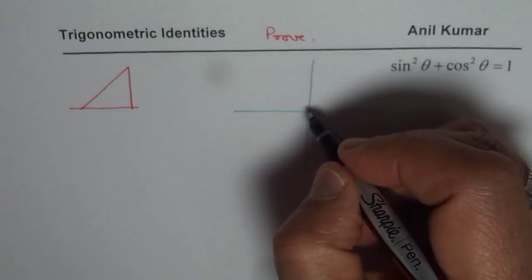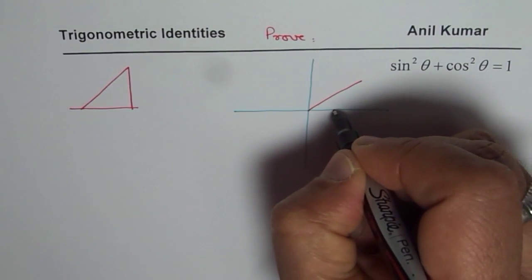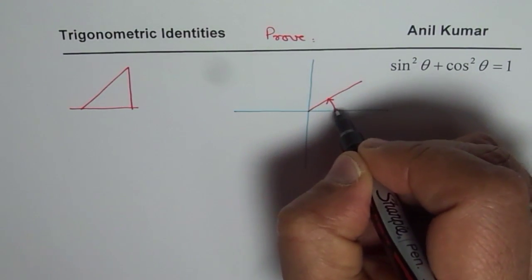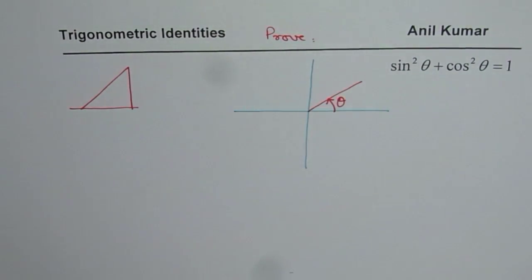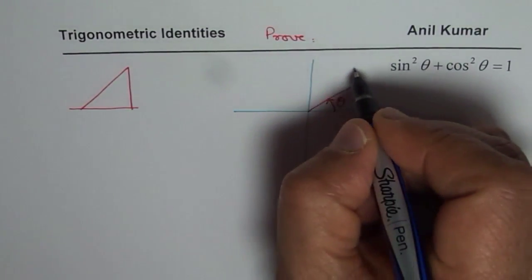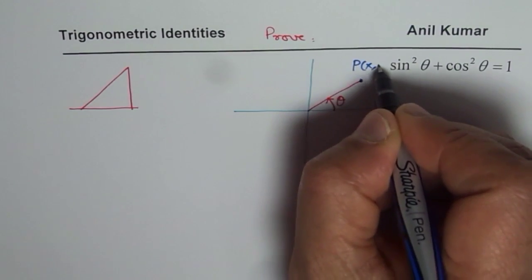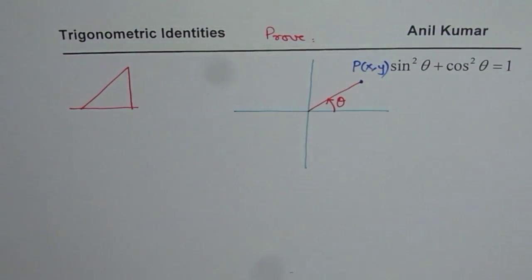we are always referring to a point in a coordinate system which is kind of moving counterclockwise and we say this angle is the principal angle theta and we consider a point on this and say let point be x and y. So, using these two basic concepts will actually prove the Pythagorean identity.